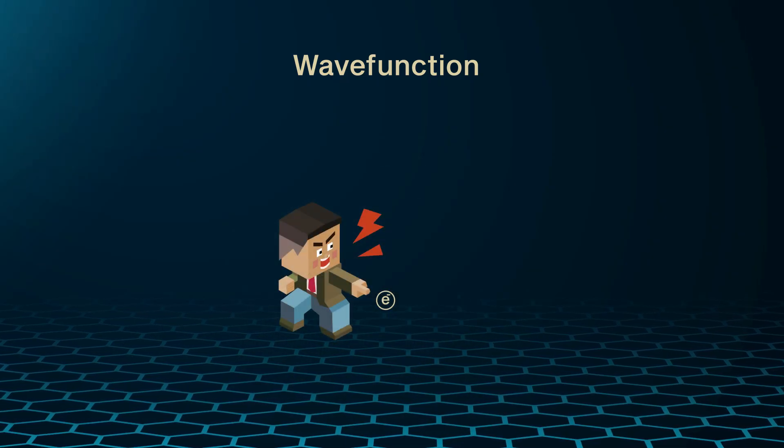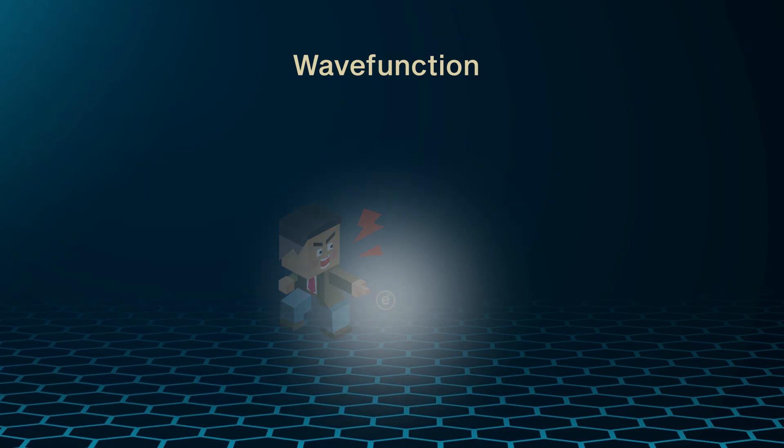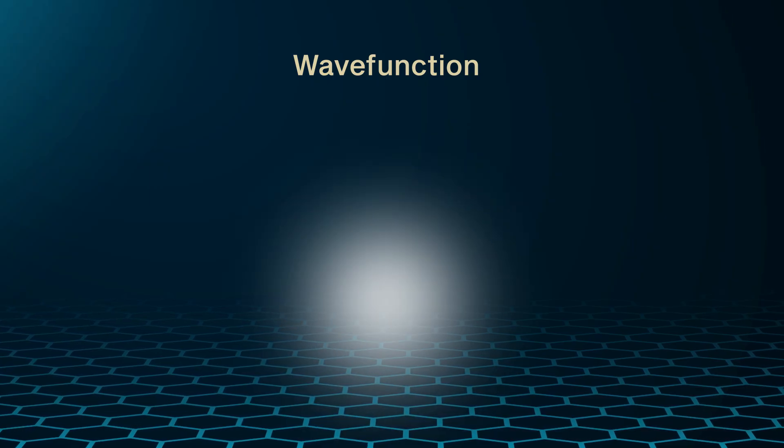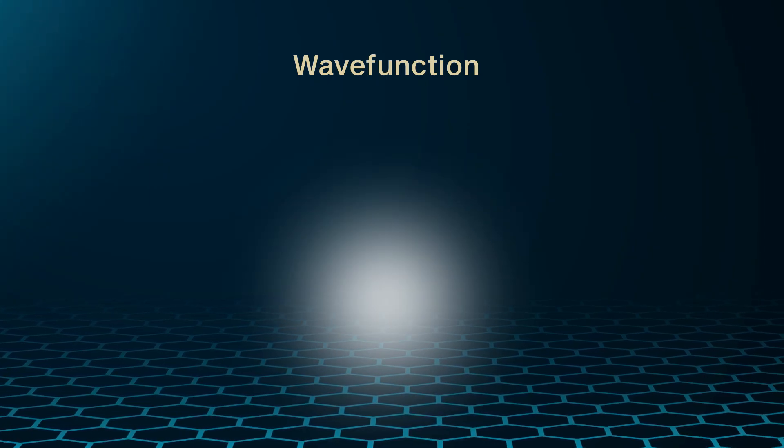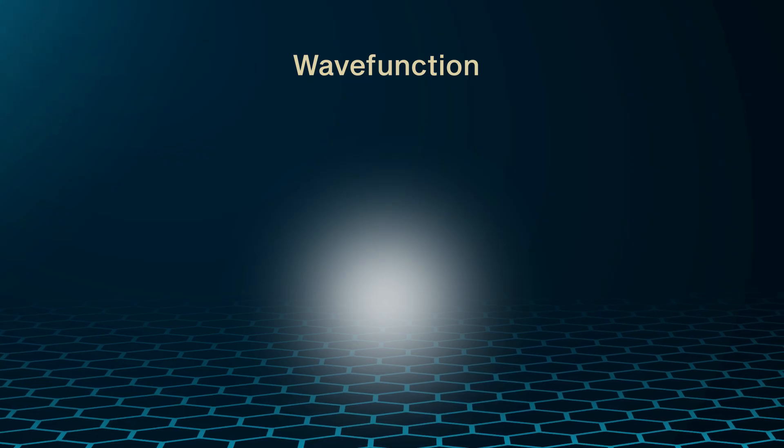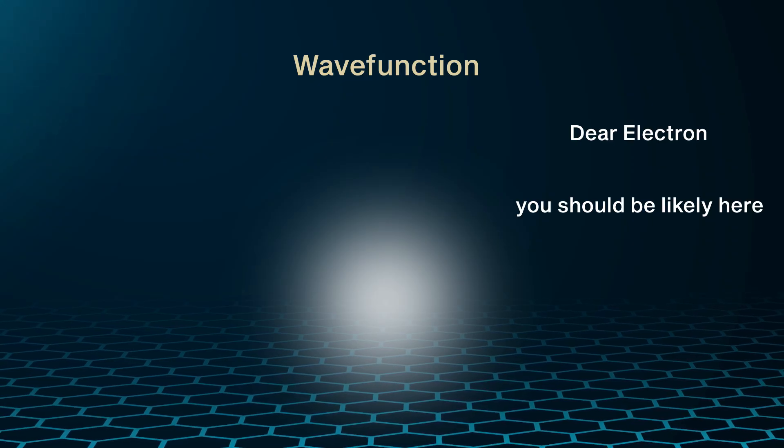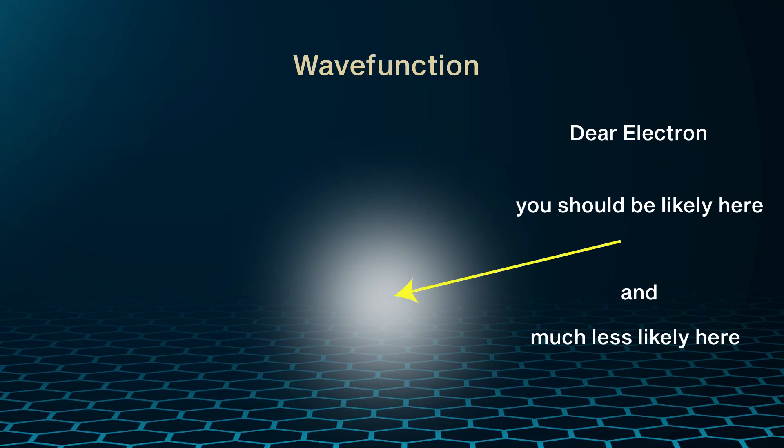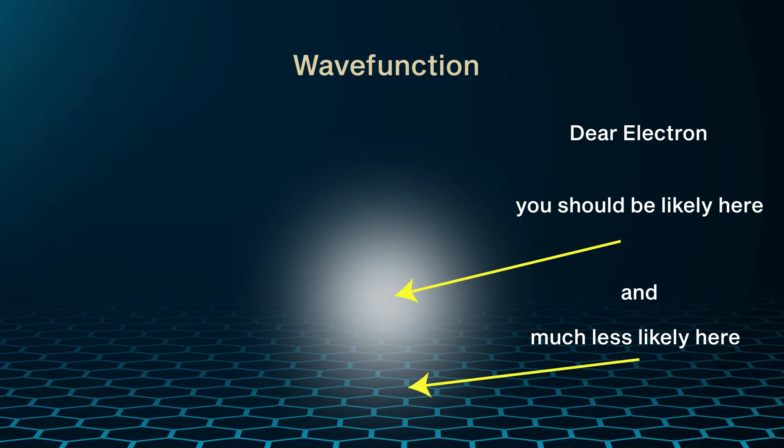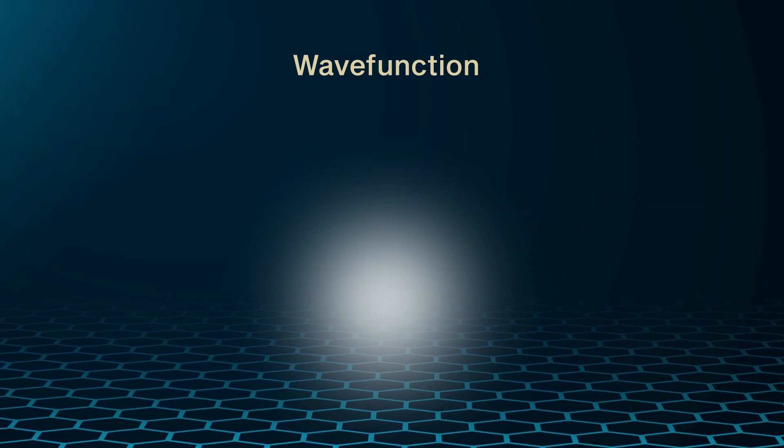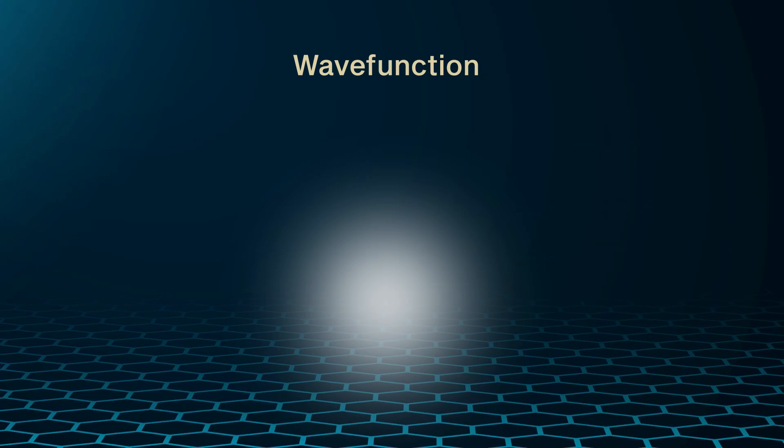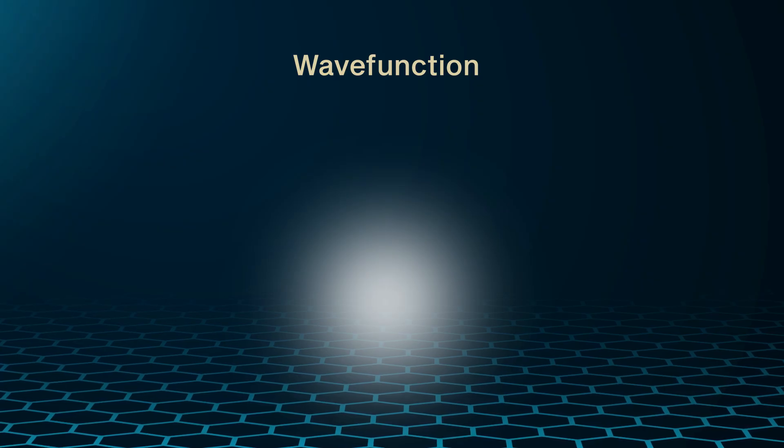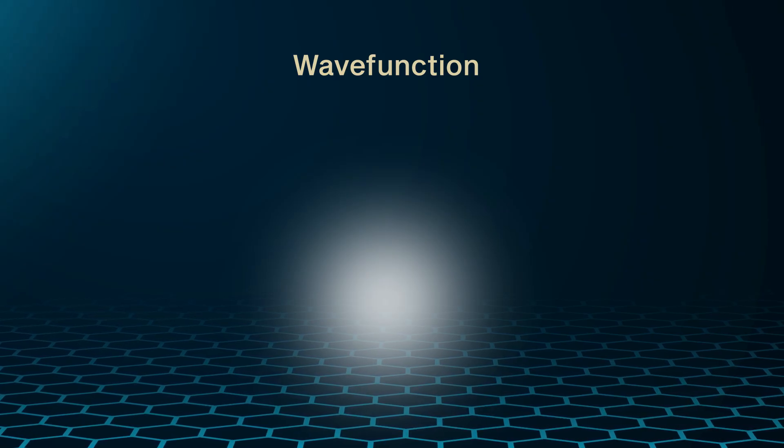So it's almost like this invisible entity that tells the electron what to do, almost like its boss. But a boss that cannot really decide what he wants. The wave function only tells us the probability of finding an electron at some point in space. And this doesn't mean that we humans are just too dumb to figure out where the electron is. Quantum particles really behave like this weird blob of probability.